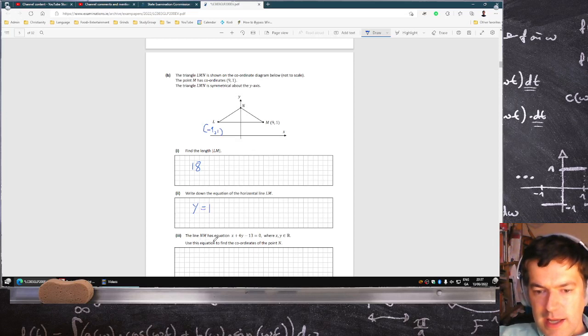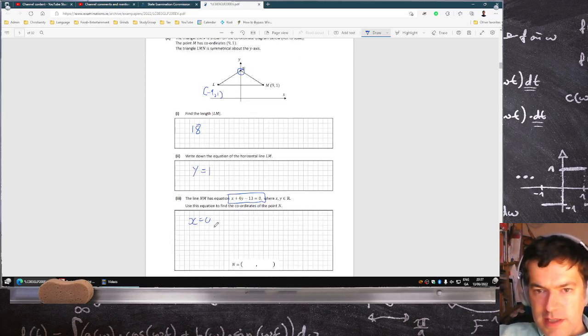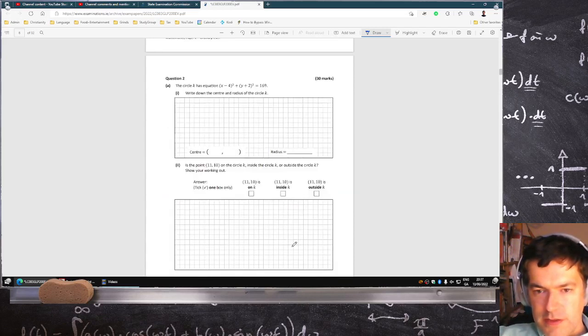The line NM has this equation. Use this equation to find the coordinates of point N. So that's where it crosses the y-axis. You just make x equal to 0, and you get 4y minus 13 equals 0. So y is 13 over 4. And that's the first question done.